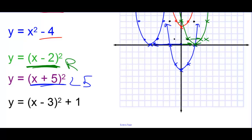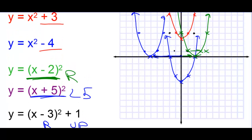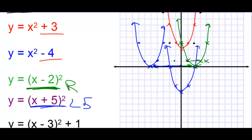On this one, we're going to go right 3 and up 1. So for each original point, we move right 3 and up 1. And our graph is getting quite messy, so we'll kind of stop there.